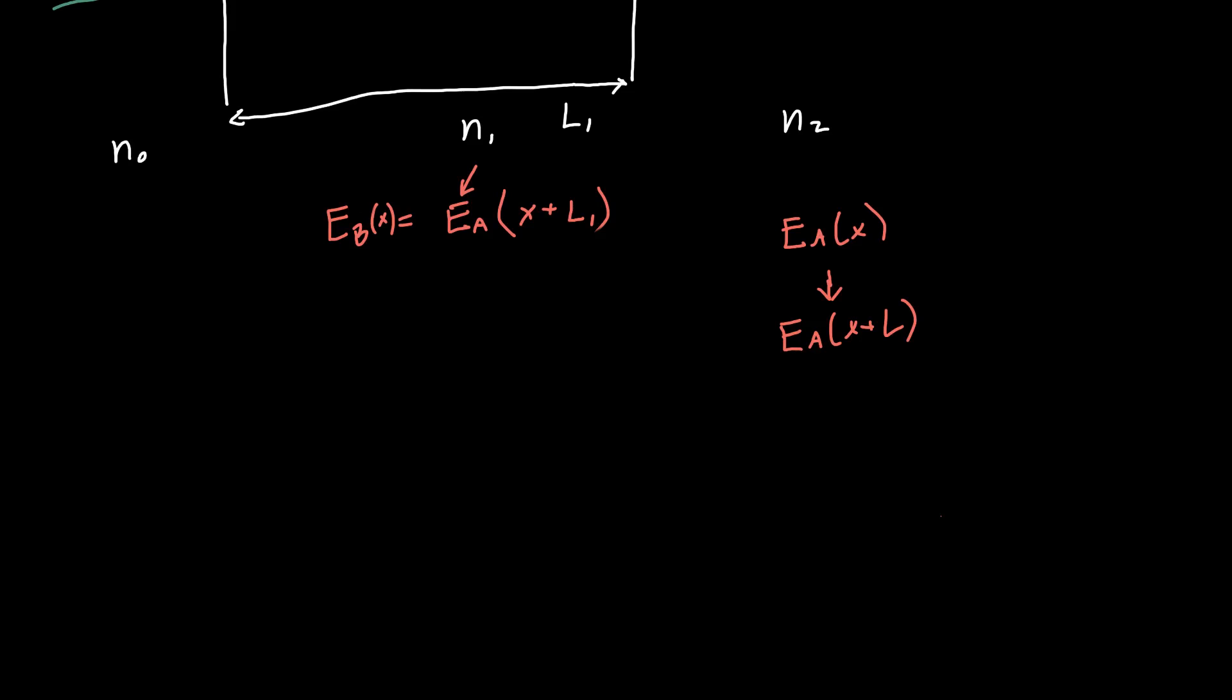What do we do with that? The electric field has just traveled some distance L1. All we need to do is now write down EA of X, and then figure out what EA of X plus L is. Then we'll have the relationship between EB and EA. What is EA as a function of X? Or in general, what is the equation for a plane wave?